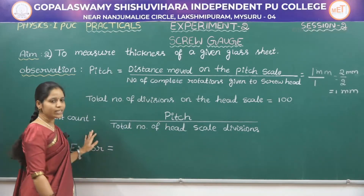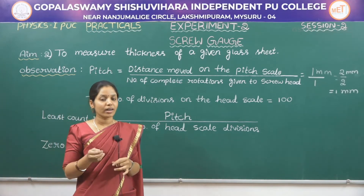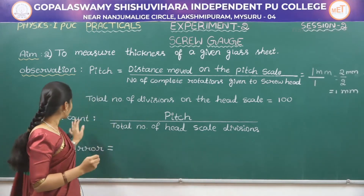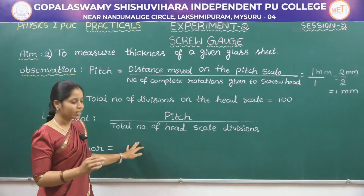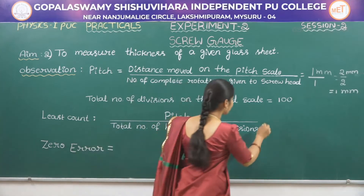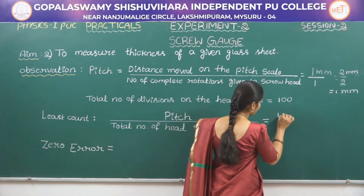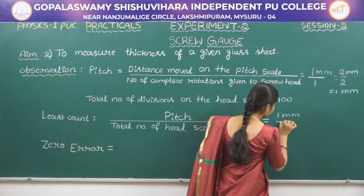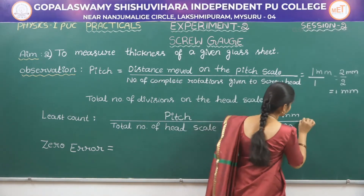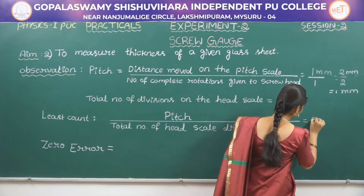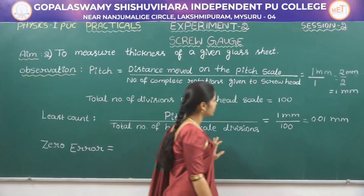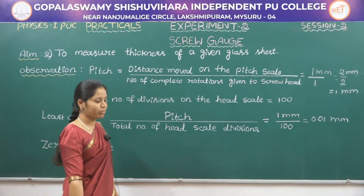Then least count — least count means the least value or the smallest value that can be measured by the instrument. The formula to find the least count is pitch divided by total number of head scale divisions. The value of pitch is 1 millimeter and the total number of divisions on the head scale is 100, so the value of least count is 0.01 millimeter.